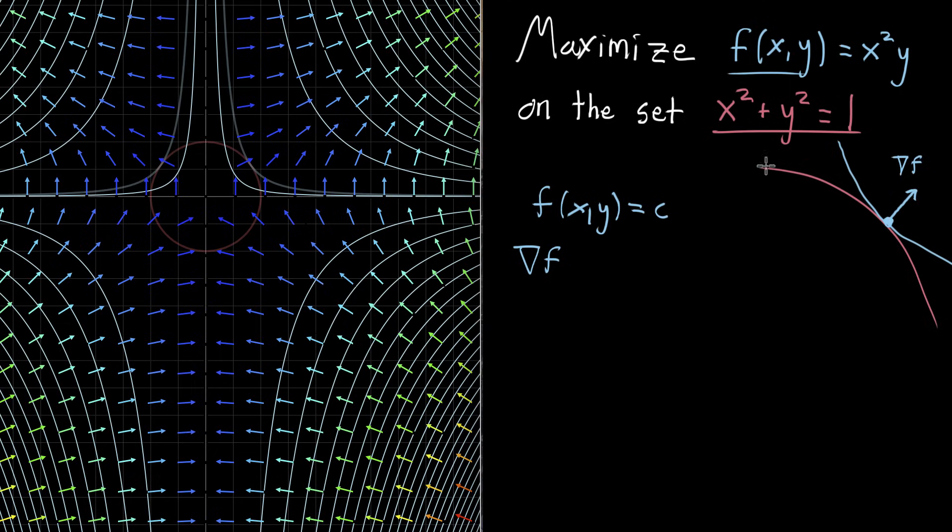And we can do something very similar to understand the other curve. Right now, I've just written it as a constraint x squared plus y squared equals 1. But to give that function a name, let's say that we've defined g of xy to be x squared plus y squared. In that case, this constraint is pretty much just one of the contour lines for the function g.